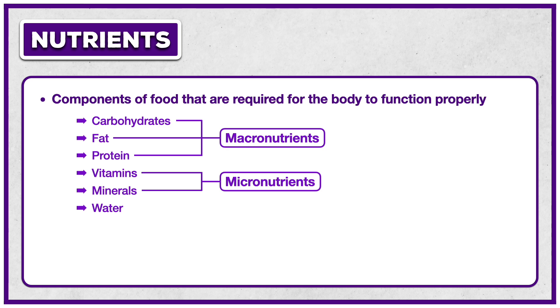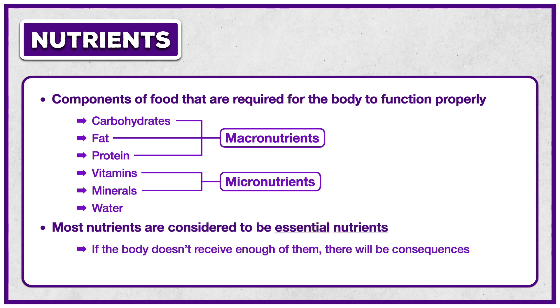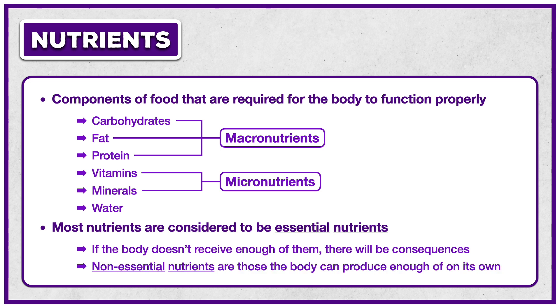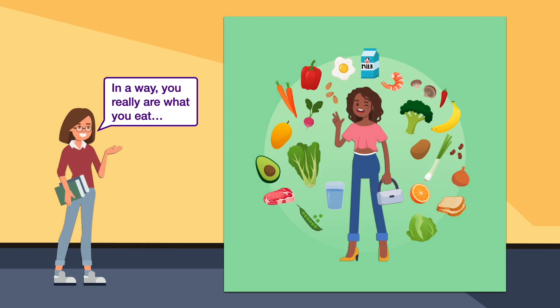Speaking to their importance, most nutrients are considered to be essential nutrients. Essential nutrients must be obtained in the diet because the body cannot produce them on its own, and if the body doesn't receive enough of them, there will be consequences. Still, there are some non-essential nutrients — those the body can produce enough of on its own. They're found in foods, but failure to reach a certain level of intake is typically inconsequential. Thinking carefully about nutrients, we can see that in a way, you really are what you eat. The six classes of nutrients are all found in different foods, and we must consume them in the appropriate quantities. Otherwise, the body won't be able to function.